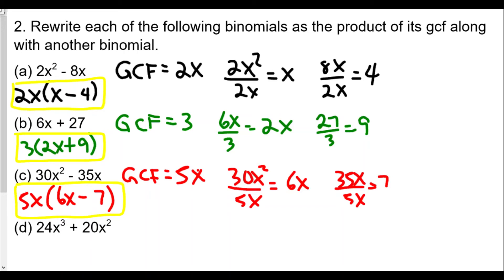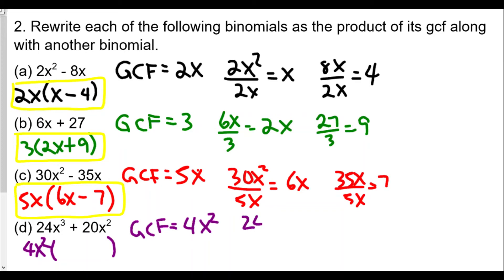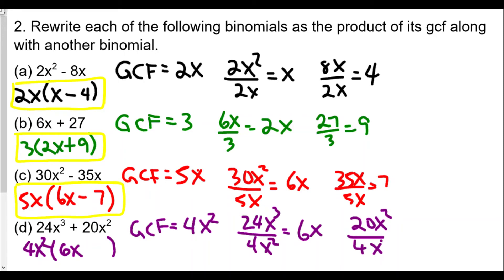For part (d), 24x³ + 20x²: the largest number into 24 and 20 is 4, and between x³ and x² the smaller exponent is x², so the GCF is 4x². Dividing: 24x³ ÷ 4x² = 6x (since 24÷4 = 6 and x³÷x² = x), and 20x² ÷ 4x² = 5. So the answer for (d) is 4x²(6x + 5).